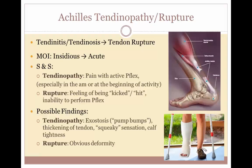Fluoroquinone antibiotics, famously ciprofloxacin, are known to increase the risk of tendon rupture, particularly the Achilles tendon. Signs and symptoms of an Achilles tendon rupture include a history of tendinopathy with pain during active plantar flexion, typically worse in the morning or at the beginning of activity. A history of tendinopathy exostosis, commonly called a pump bump, is a bony outgrowth on the heel formed where the Achilles tendon has pulled away from the calcaneus. Patients may also report a squeaky sensation felt in the calf before the injury and a previous history of calf tightness. When there is a rupture, there is most often an obvious deformity and the calf will contract with the torn Achilles tendon.